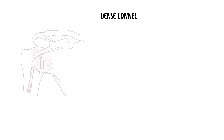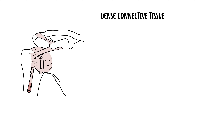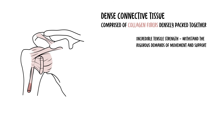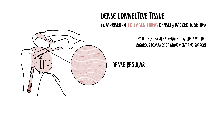Next is dense connective tissue, which is another type of connective tissue proper. In stark contrast, dense connective tissue is the body's equivalent of reinforced concrete. It's tougher, more compact, and designed to handle stress and strain. It is comprised predominantly of collagen fibers densely packed together, and this tissue type gives tendons and ligaments their incredible tensile strength. Based on the arrangement of the fibers, there are two subtypes: dense regular and dense irregular.